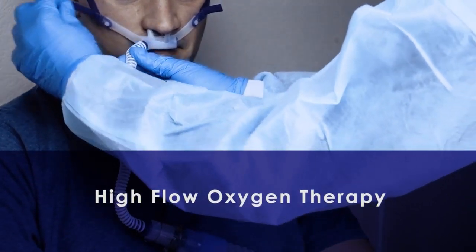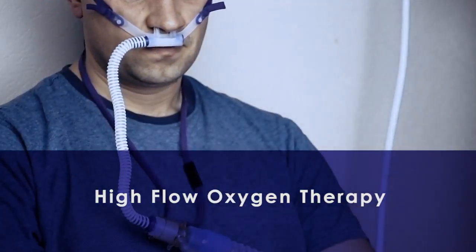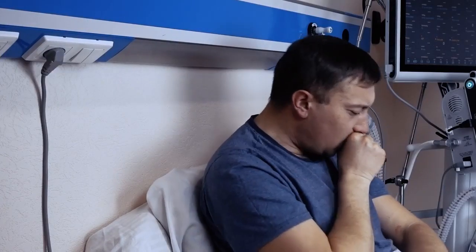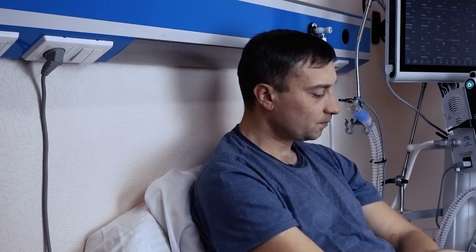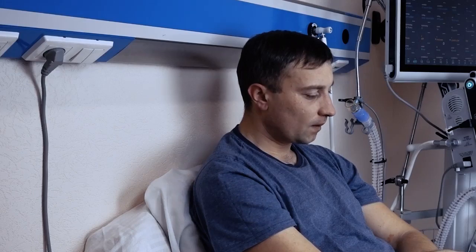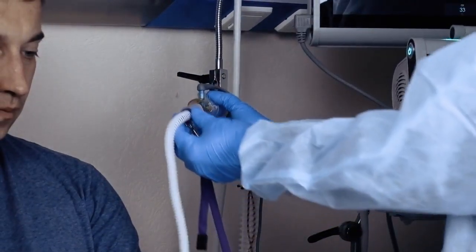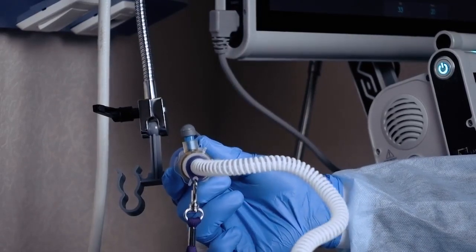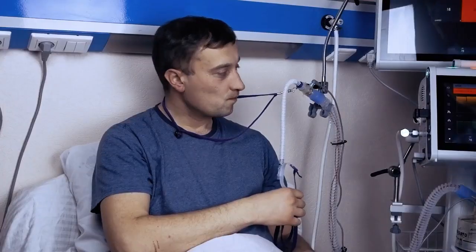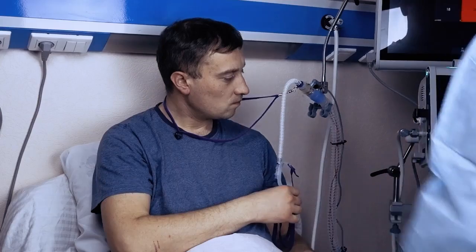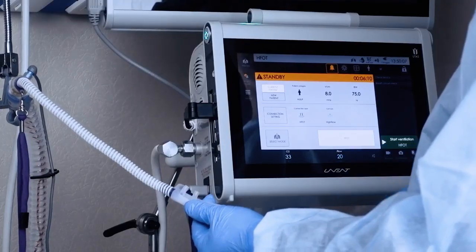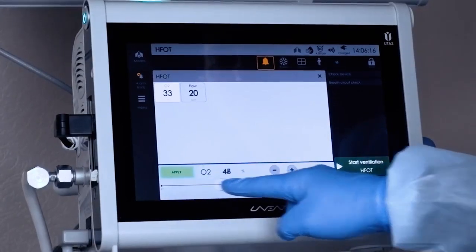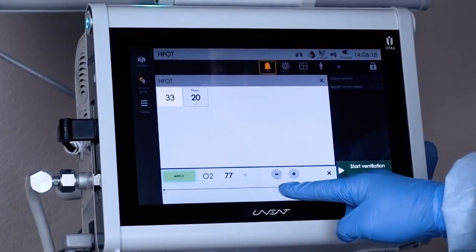High flow oxygen therapy is the primary strategy for COVID-19 patients. Supportive care includes oxygen therapy for hypoxemic patients, in which high flow nasal cannula (HFNC) has been reported to be efficient in improving oxygenation among patients with acute hypoxemic respiratory failure. HFNC was proven to avoid intubation compared to conventional oxygen devices. Uvent ventilators provide high flow oxygen therapy.